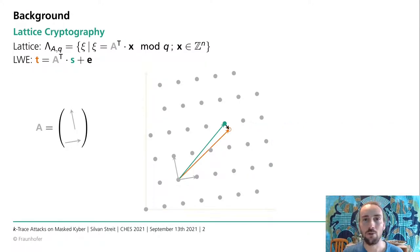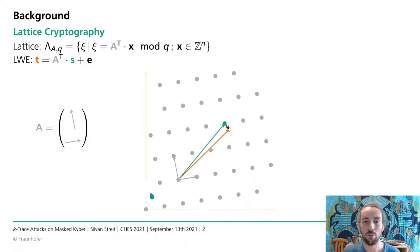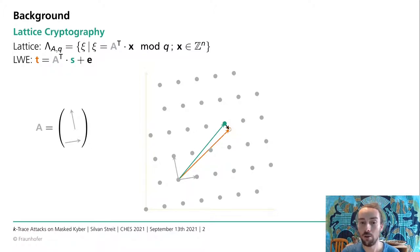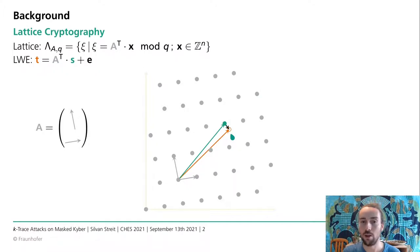First, lattice cryptography. A lattice is defined by a basis A consisting of basis vectors. In such a lattice we can define the learning with errors problem, also called LWE. Here it's given as the secret vector S, which is distorted by a small error vector E. This results in a new vector T. The computation of T with knowledge of S and E is straightforward; however, going back to S without knowledge of S or E, with only knowledge of T, is rather tedious.